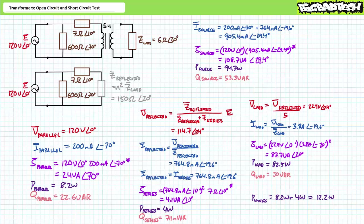An application of the AC power equation demonstrates the load experiences 87.7 volt-amperes of apparent power, of which 82.5 watts is directed towards real power and roughly 30 VARs towards reactive interchange. Of the 94.7 watts of real power delivered by the source, 82.5 watts is directed towards useful output by the load and 8.2 watts plus 4 watts — roughly 12.2 watts — is directed towards losses. In totality, this represents an efficiency of roughly 87.1 percent.